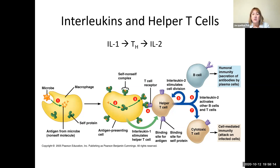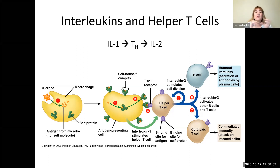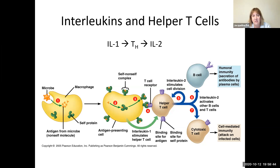In addition, interleukin-2 is going to be activating cytotoxic T cells, so that we have a good cell-mediated immune reaction, as well as activating B cells. So we have a robust production of plasma cells and all their antibodies, giving us lots of humoral, or antibody-mediated, immunity.